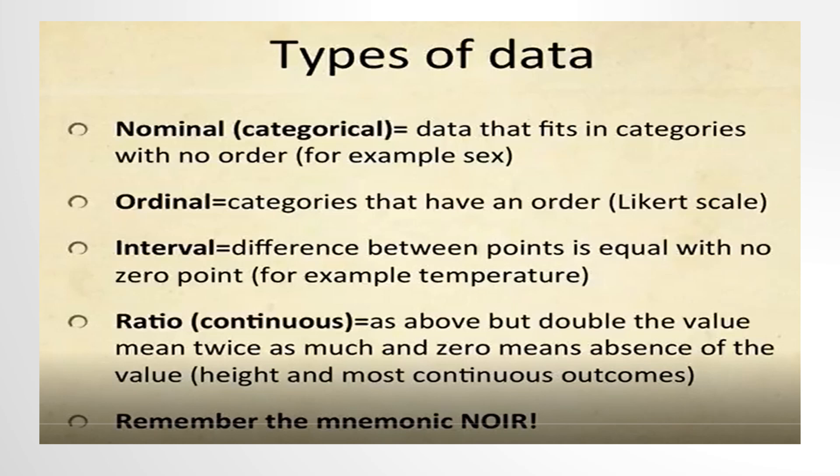Interval data: the difference between points must be equal, with no true zero point. For example, temperature. Interval scales are numeric scales in which we know both the order and the exact difference between values. The example of an interval scale is Celsius temperature — the difference between 60 and 50 degrees is measurable at 10 degrees, the same as between 80 and 70 degrees. Central tendency can be measured by mode, median, or mean, and standard deviation can also be calculated.